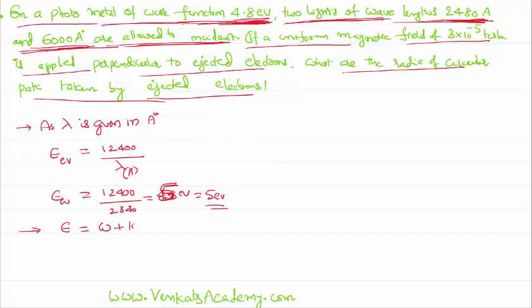Energy equals work function plus kinetic energy. Incident energy is 5 electron volts, work function is 4.8 electron volts, so kinetic energy is 5 minus 4.8, that is 0.2 electron volts. We can convert that electron volts into 1.6 into 10 power minus 19 joules.